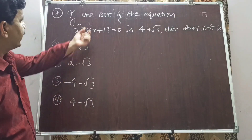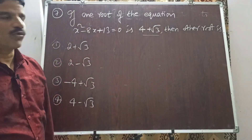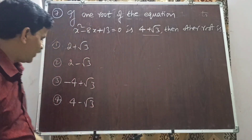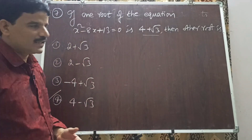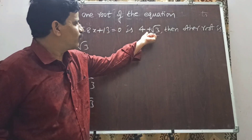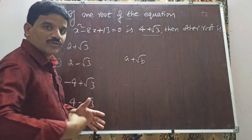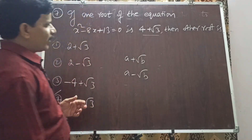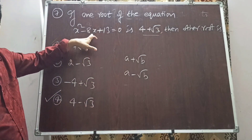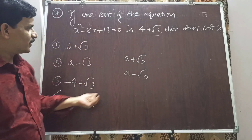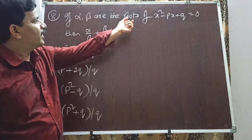Question 7: If one root of x² - 8x + 13 = 0 is 4 + √3, then the other root is 4 - √3 (option 4). For any quadratic equation, if one root is irrational like a + √b, then its conjugate a - √b is the other root. Verification: (4+√3) + (4-√3) = 8, which matches -b/a = 8. Correct.